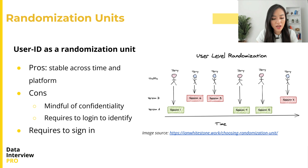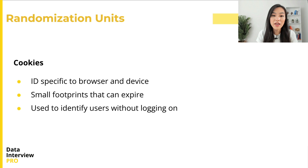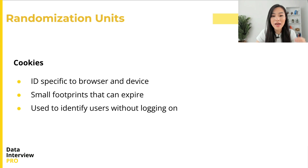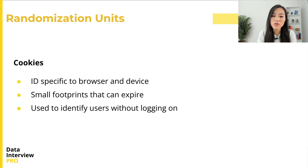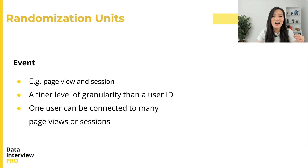Another limitation of user IDs is that they require the user to log in. Unlike user IDs, cookies are pseudonymous IDs specific to a browser and device. They are small footprints automatically assigned and stored in a browser when you visit a website. Because cookies are anonymous they are not identifiable, but users can clear cookies and they do not persist across browsers or platforms — for example, switching from Chrome to Firefox changes the cookie. Cookies can also expire, so they act like temporary user IDs.